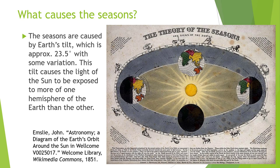What causes the seasons? It's the tilt. If you look at this illustration, this is at one of the solstices, giving more daylight on this part of the Earth. The northern hemisphere is at that moment tilted toward the sun. In the winter solstice, the southern hemisphere is tilted toward the sun. During the equinoxes, both hemispheres get equal lighting because they are kind of next to it instead of in front or back.